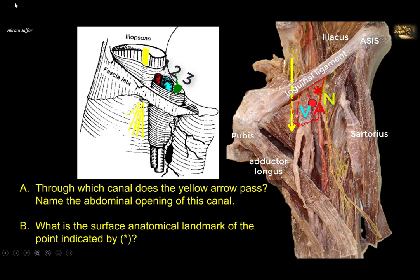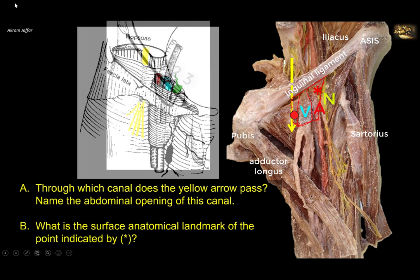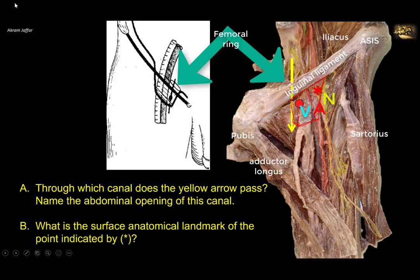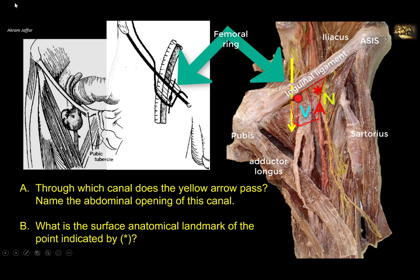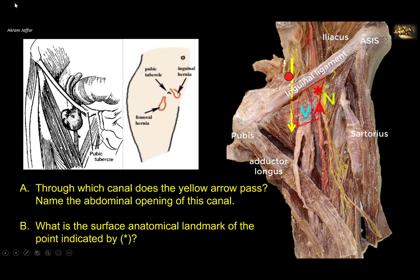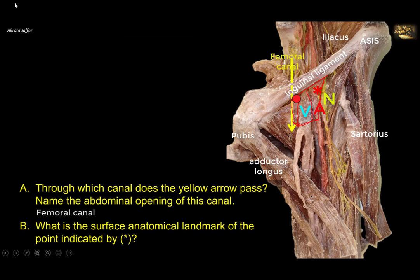The vessels are contained within the femoral sheath. Returning to the medial compartment of the femoral sheath, which is a potential space that allows for dilation of the vein whenever there is increased venous return, this has an abdominal opening called the femoral ring. This is a potential weak area in the abdominal wall and may predispose to the formation of a hernia — the passage of omentum or a viscus from the abdomen to the outside — which we call the femoral hernia. It is different from the inguinal hernia, which appears through the inguinal canal above the inguinal ligament. So the arrow passes through the femoral canal, and the abdominal opening is known as the femoral ring.